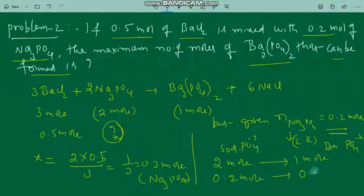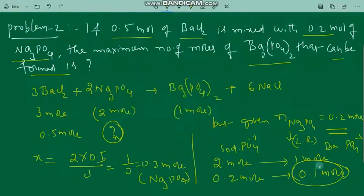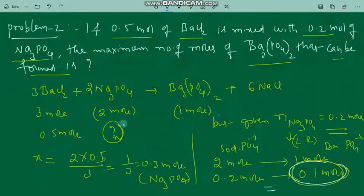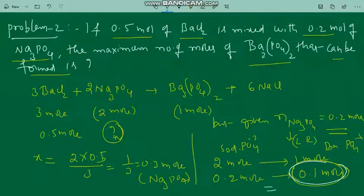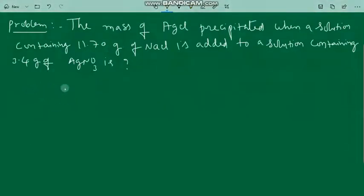The maximum number of moles of barium phosphate that can be formed is 0.1 mole. Sodium phosphate is identified as the limiting reagent since 0.2 moles given is less than the 0.33 moles expected from the equation.